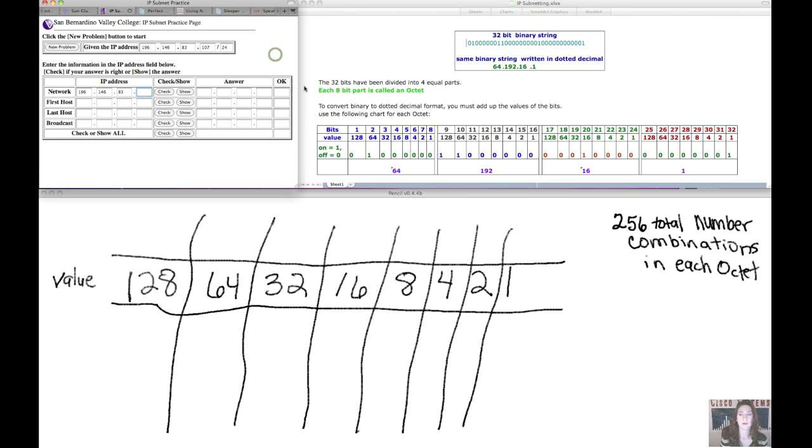But let's use this subnet practice to help us out. It's given us an IP address of 196.146.83.107 slash 24. Yay!